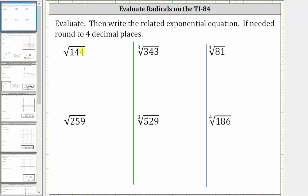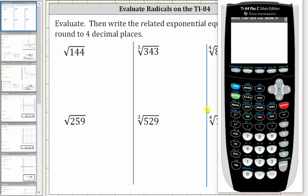First we have the square root of 144. We can access the square root from the home screen. Notice there's a square root above the x-squared key, which means if we press second, then x-squared, it brings up the square root. We enter 144 and press enter. The square root of 144 is 12.